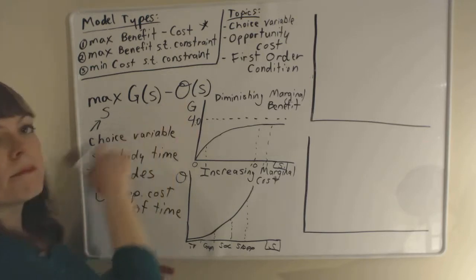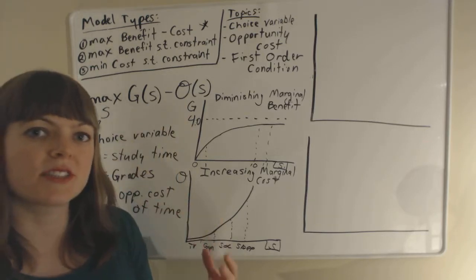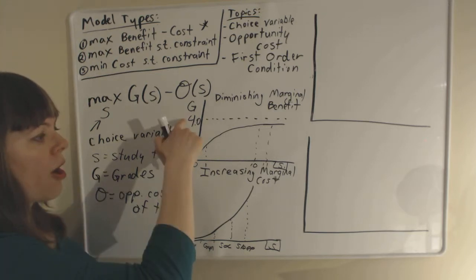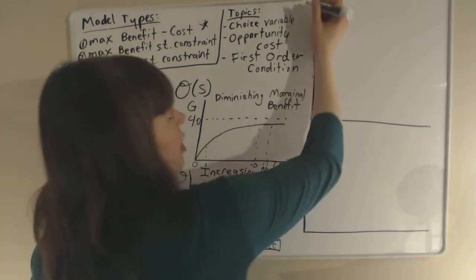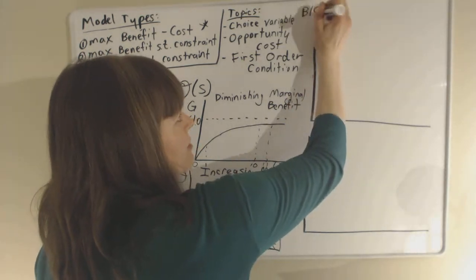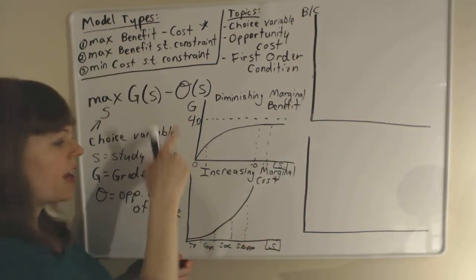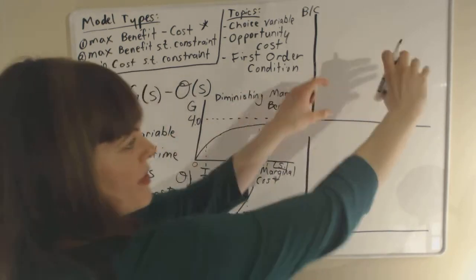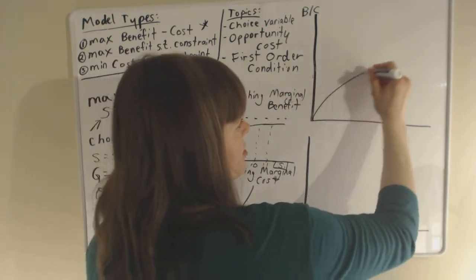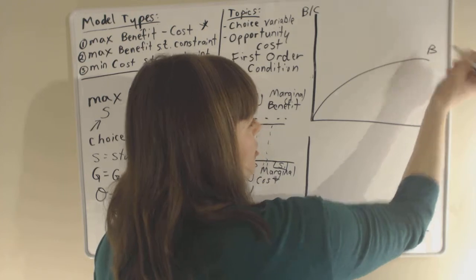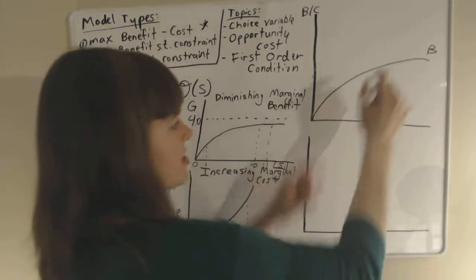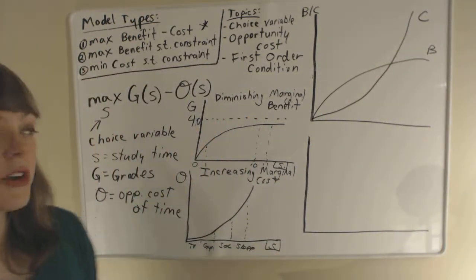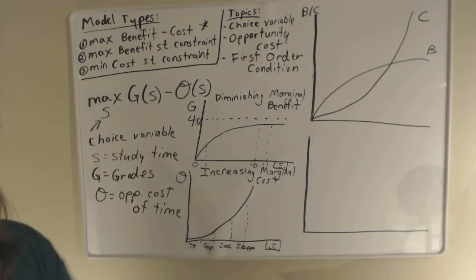So how do we think about this person's decision on how much to study? Let's put benefit and cost on the same graph. We know benefit is grades and cost is opportunity cost. Here's our benefit function — our grades — and here's our cost function. The person wants to maximize benefit minus cost, so they must choose the time spent studying to get the maximum value.